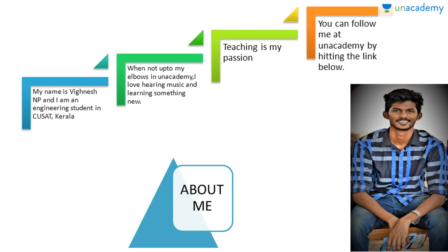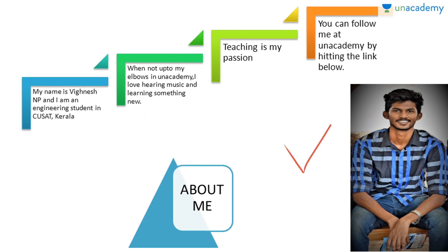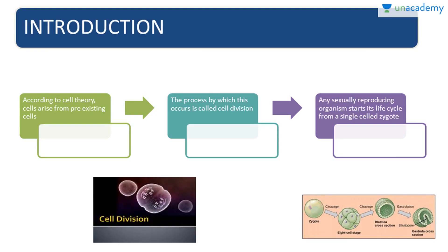My name is Vignesh NP and teaching is my passion. You can follow me on an Academy by hitting the link below. To introduce: according to cell theory, cells arise from pre-existing cells, which we have learnt in the previous chapters. The process by which this occurs is called cell division. Any sexually reproducing organism starts its life cycle from a single cell — the zygote.